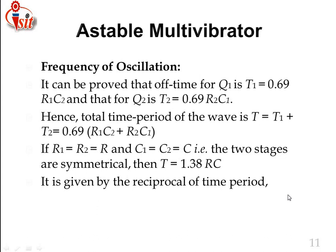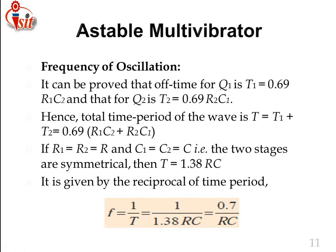The frequency is the reciprocal of the time period. We know F = 1/T and T = 1/F, and T = 1.38RC. Therefore F = 1/1.38RC ≈ 0.7/RC. This gives us the measurable value for frequency calculation for the astable multivibrator.